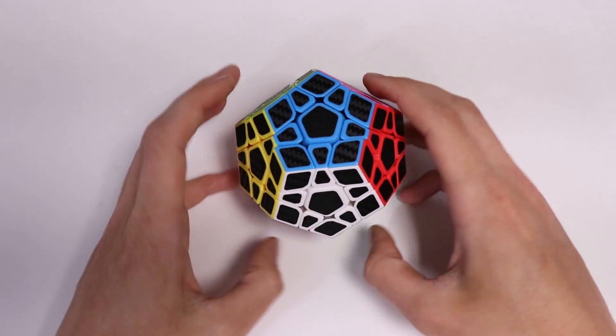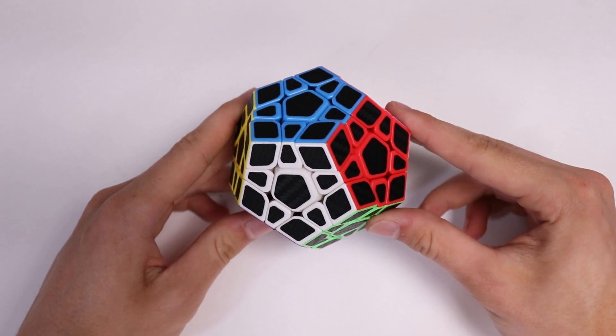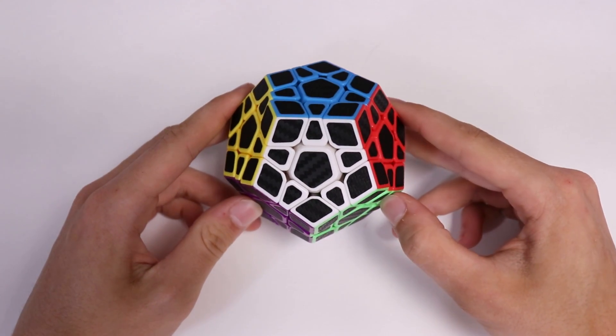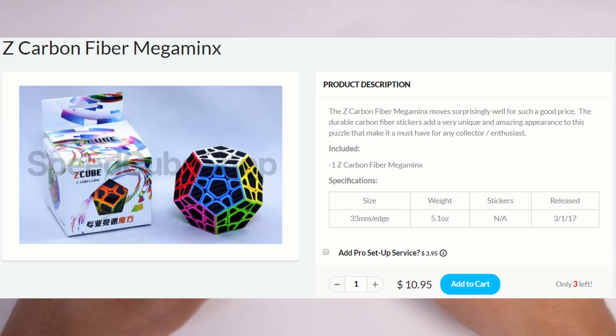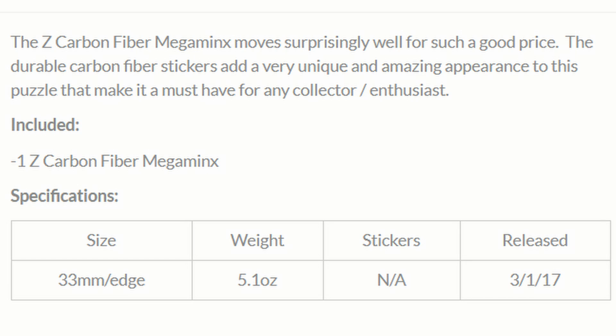In this video we have a review of the Carbon Fiber Mega Minx. This one's pretty okay. The Carbon Fiber Mega Minx was released March 1st of 2017. It weighs 5.1 ounces and has a side length of 33 millimeters.